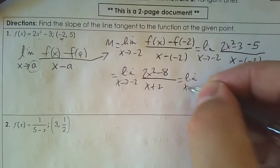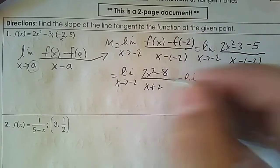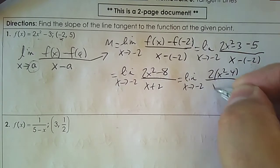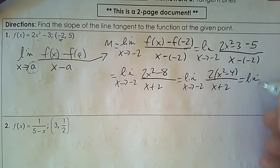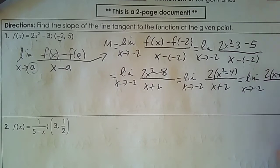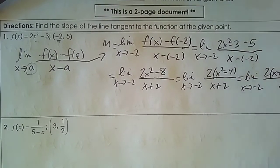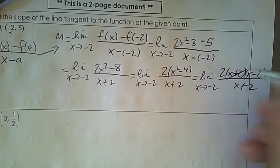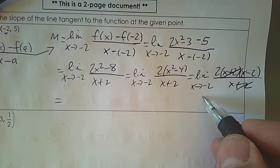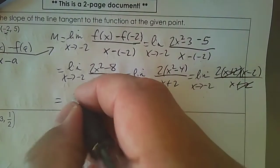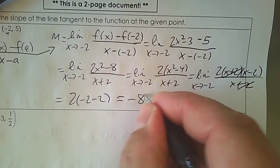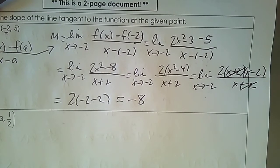I look to see if I can factor to divide out the hole. In the numerator, 2 goes into both, leaving x² subtract 4. That's called the difference of squares, so it factors as (x+2)(x-2). Now you can see the hole that divides out. Substitute in negative 2: we have 2 times (negative 2 minus 2), which is 2 times negative 4. So the slope at that point is negative 8.